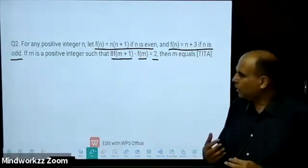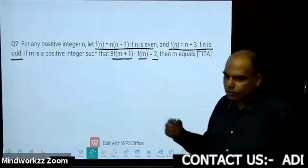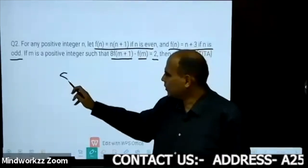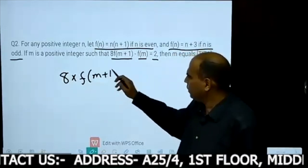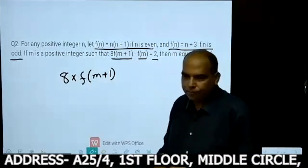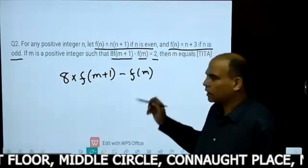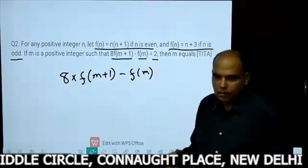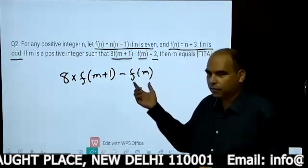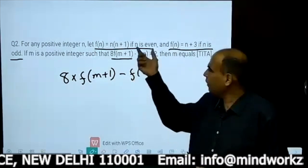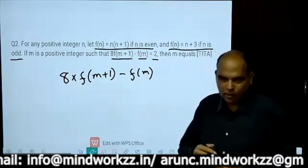The key here is to be able to read what this is saying: 8 times f(m+1), where m is a positive integer, minus f(m). So what this tells me is, if I take m as even, then this is an even value.